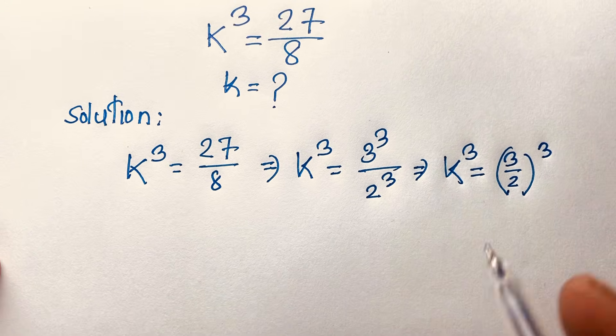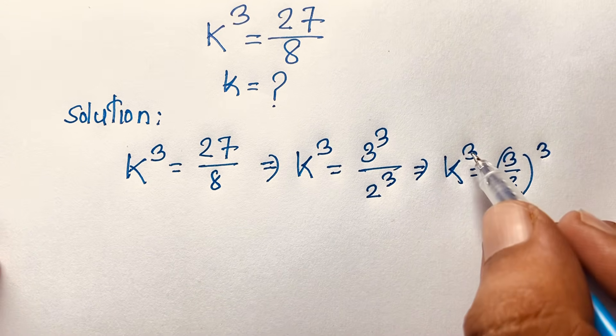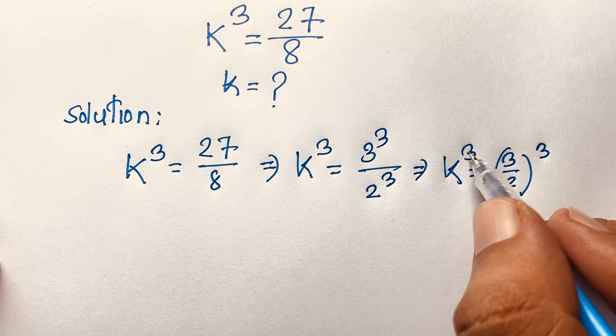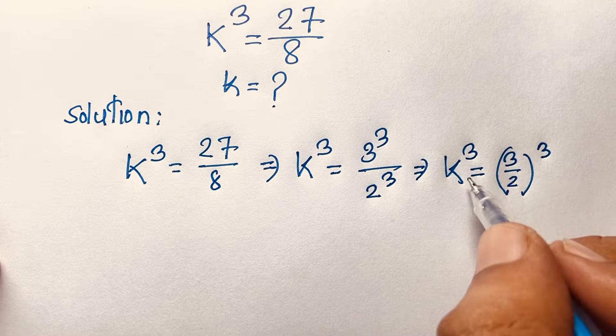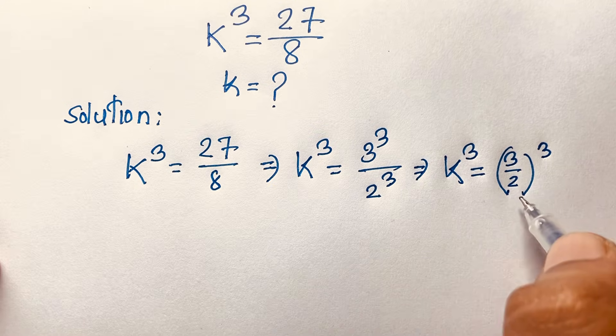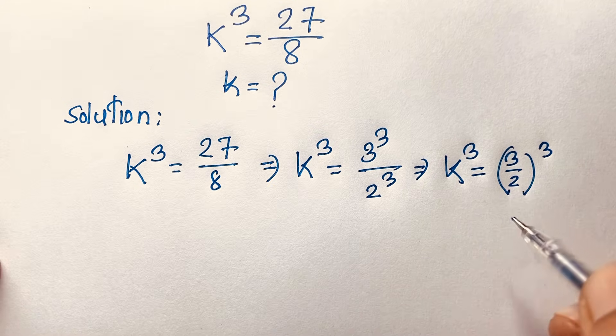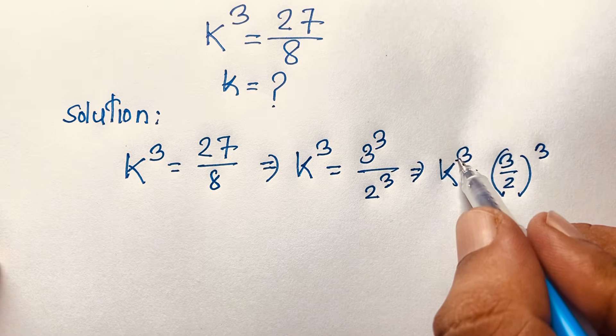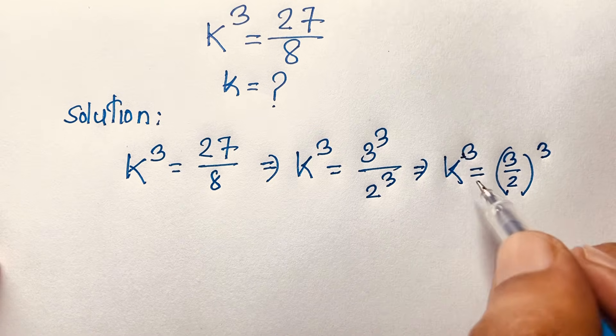At this point, the base and exponent are the same on both sides, so we can say the bases are equal: k = 3/2. This is our first answer, but let's also find the cube root more formally.